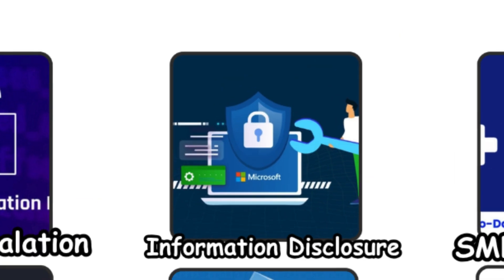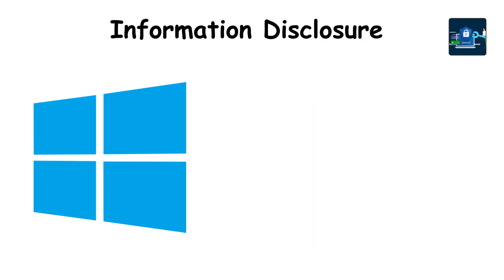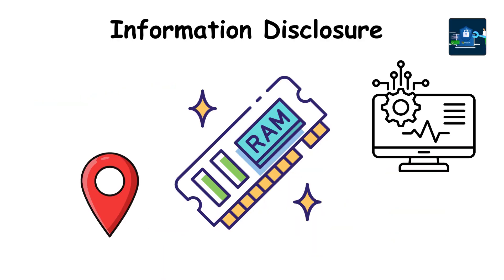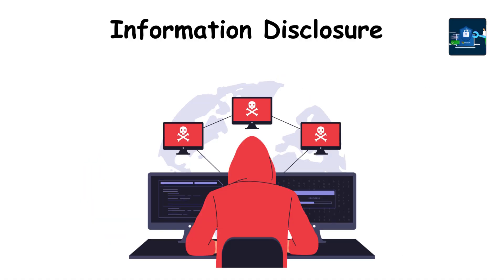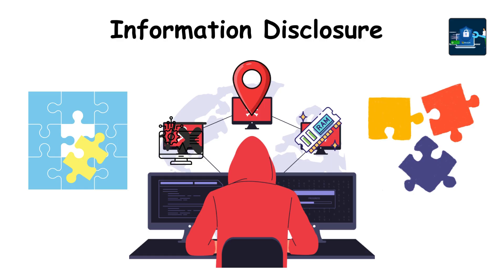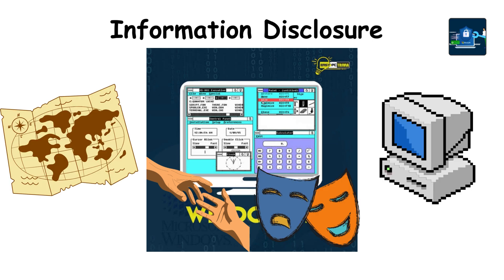Information disclosure. Picture a locked drawer slightly open, showing just enough to reveal what's inside. Windows sometimes leaks small details like memory locations or system variables. Attackers used those clues like puzzle pieces to plan bigger attacks. Older Windows versions often exposed ASLR-related information, helping hackers map the system. It's Windows revealing hints without meaning to.